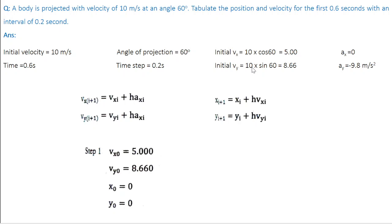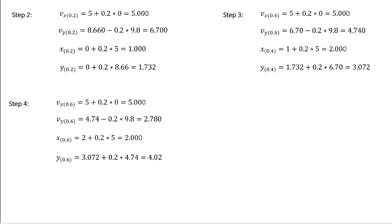These are the initial values. Now apply Euler's formula step by step to find the velocities and positions in each subinterval. In step 1, all values are the initial values: Vx0 equals 5, Vy0 equals 8.66, and X0 and Y0 are both 0. In the next subinterval, Vx(0.2) equals Vx(0) plus 0.2 times Ax0, which is 5 plus 0.2 times 0, giving 5. And Vy(0.2) equals Vy(0) plus 0.2 times Ay0, which is 8.66 plus 0.2 times minus 9.8, giving 6.7.